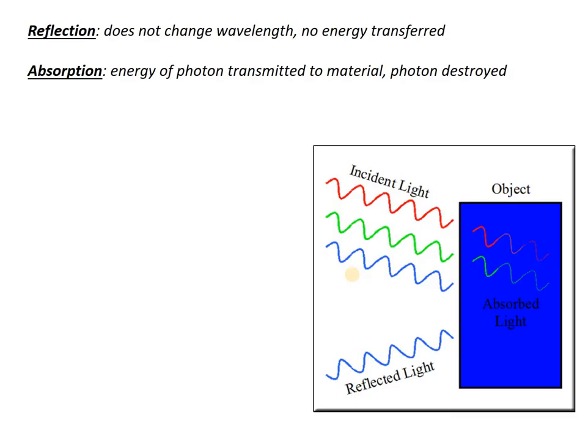Reflection is what happens when a photon hits an object and bounces back, just like light in a mirror. There's no change in wavelength, and there's no energy transferred. Absorption is the opposite — the photon strikes a material, and the energy of that photon is transmitted into the material.